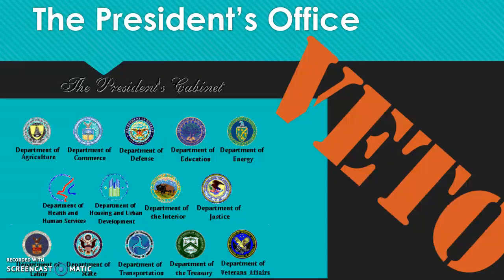A unique power that the executive branch has is the veto power — the power to reject laws. Additionally, you might hear about presidents passing executive orders, which is a way in more of an emergency situation to enact laws or new policies without going through the same congressional process.